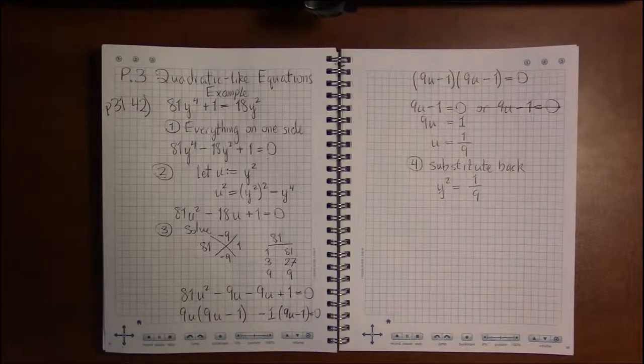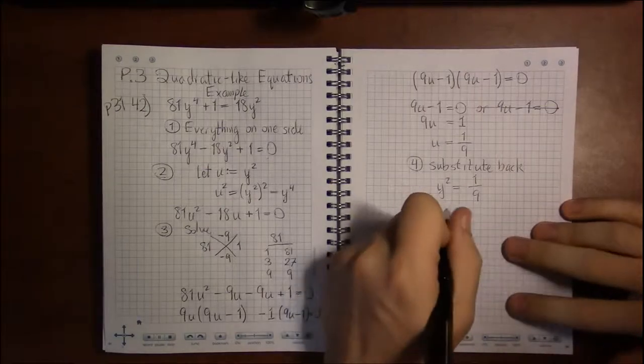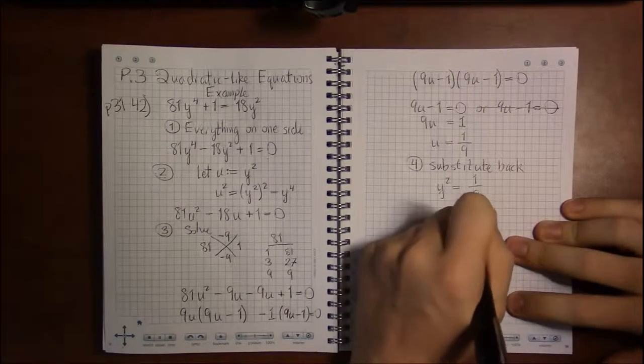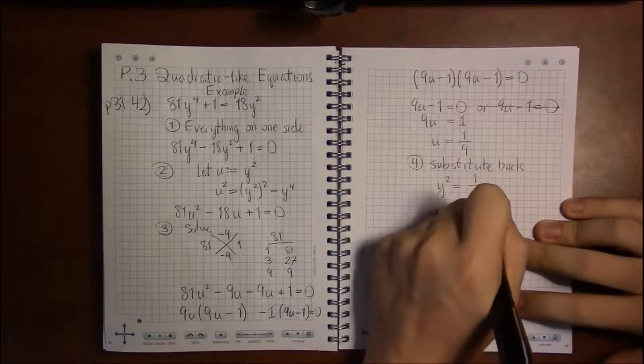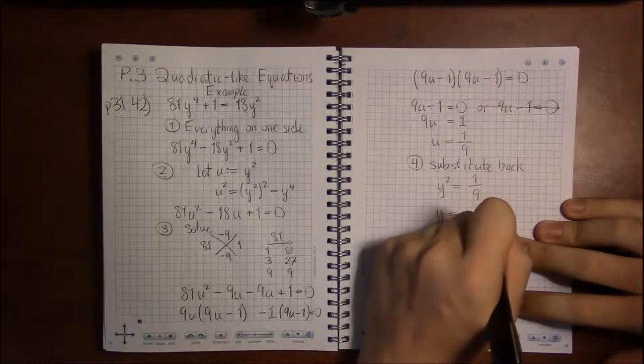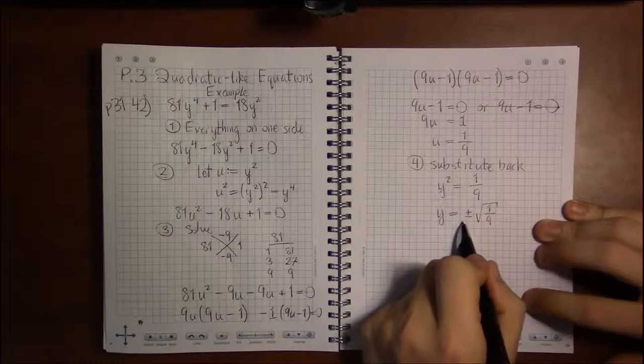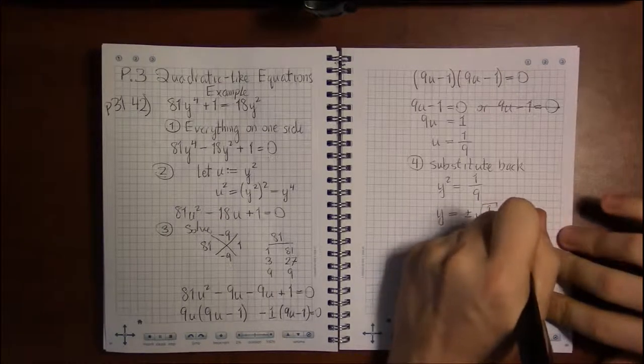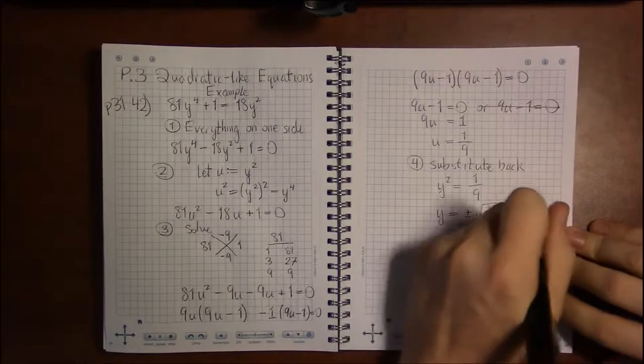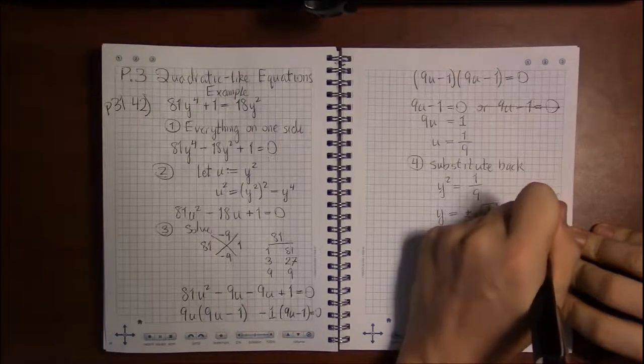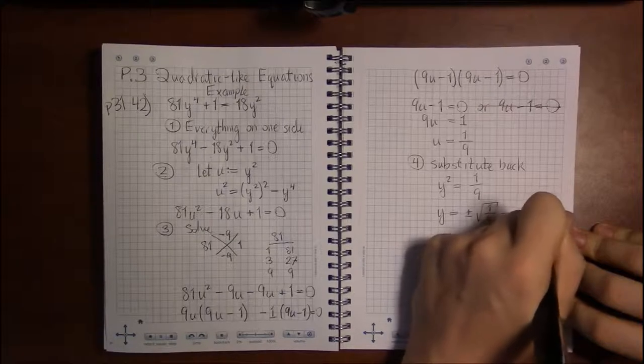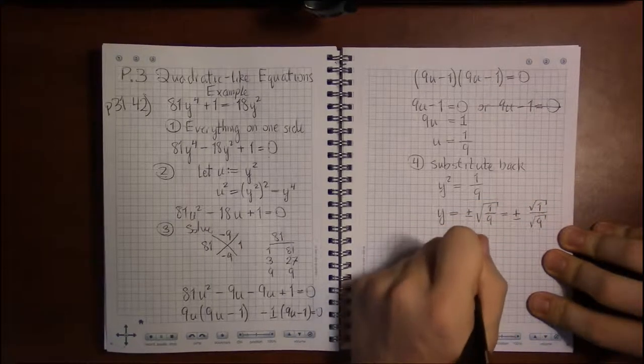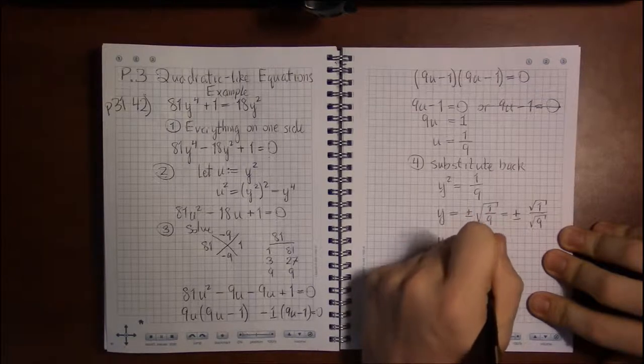Well, to get rid of a square, we take square roots of both sides, adding the obligatory plus or minus. So we have y is plus or minus the square root of 1 ninth. Square roots play nicely with fractions and multiplication. So this is just the square root of the top divided by the square root of the bottom. And that leaves us with plus or minus 1 third.